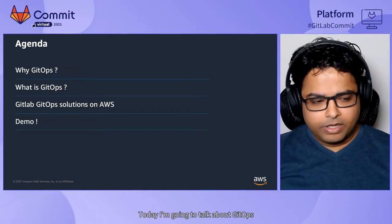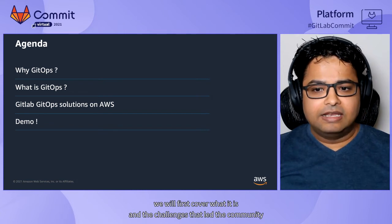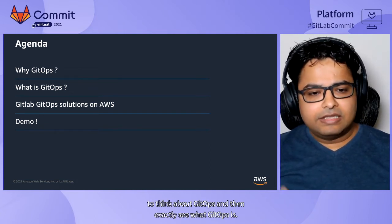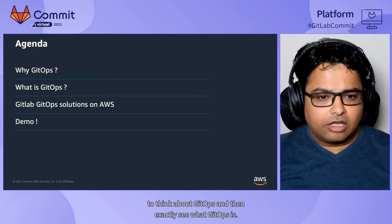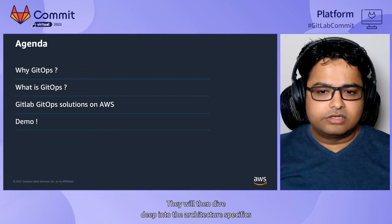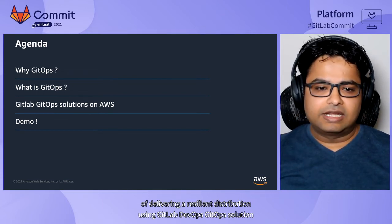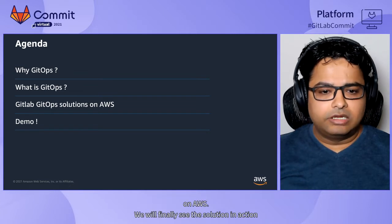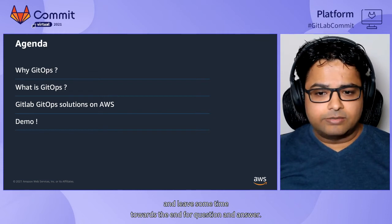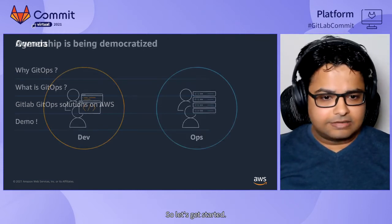Today I'm going to talk about GitOps. We will first cover what it is and the challenges that led the community to think about GitOps, and then see exactly what GitOps is. We will then dive deep into the architecture specifics of delivering a resilient distribution using GitLab's GitOps solution on AWS. We will finally see the solution in action and leave some time at the end for questions and answers.